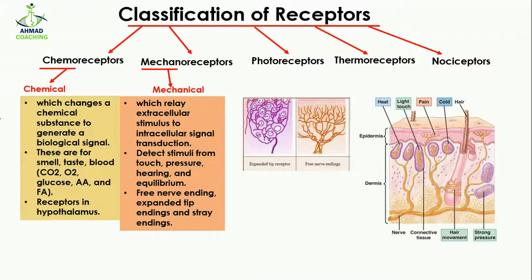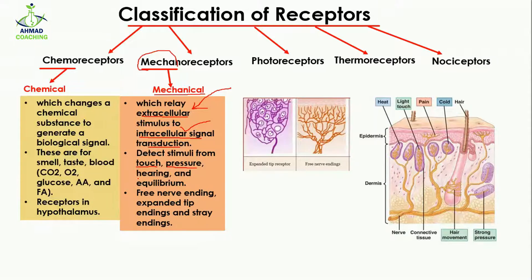The second type of receptors are mechanoreceptors. 'Mechano' means mechanical. These receptors convert extracellular stimuli into intracellular signals — they receive external signals and generate internal stimuli so the body can respond. They detect stimuli from touch, pressure, hearing, and equilibrium — all external changes detected by mechanoreceptors.